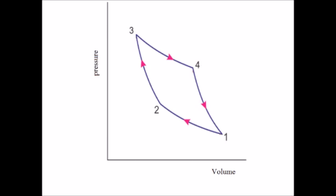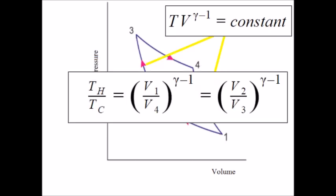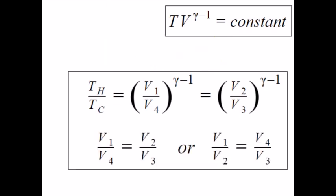But what about entropy? First, we proved something in part one that we can use here. Division, it's a thing. Ratios, tasty. Remember that we only have two temperatures to worry about but four different volumes. So cross multiplication, also still a thing.